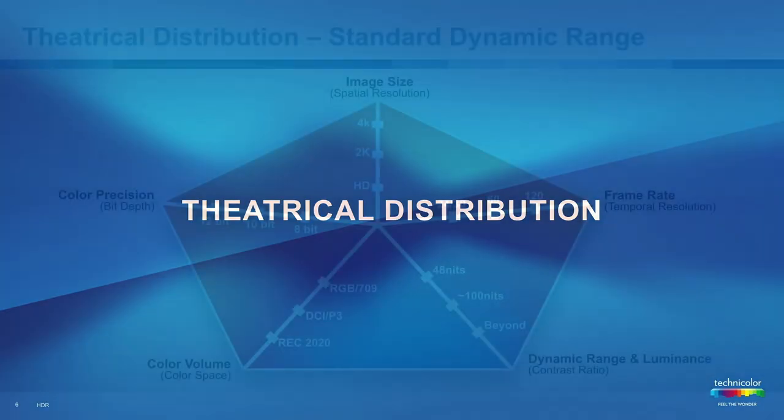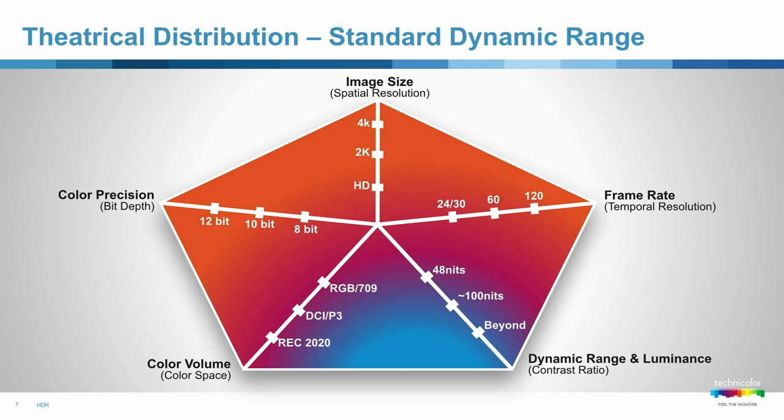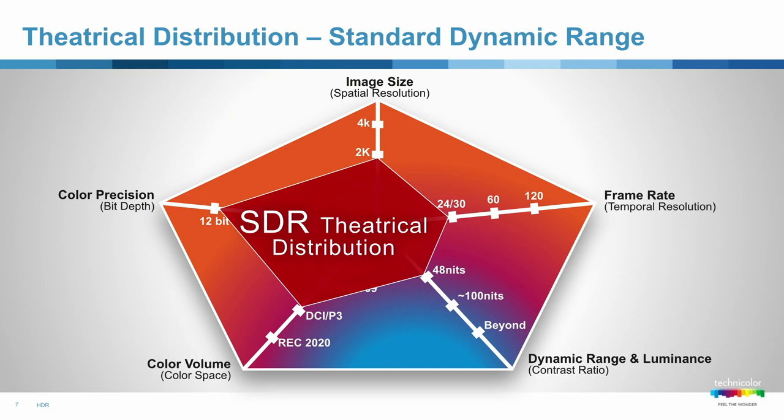Starting with theatrical, we'll look at what we've been doing in theatrical grading. To date, we've basically been doing 2K grading — there are 4K projectors out there, but the majority of digital cinema projection for distribution is 2K. 24 frames, 12-bit precision for distribution for DCPs, P3 color, and 48 nits. Nits is a measure of brightness — that's how white it can go. That, compared to how dark it can go, gives you your contrast ratio, which is your dynamic range. Different digital projectors have different black levels, so I don't include black level here, but we'll include that as we get into grading for the home, where there are standards people are targeting.